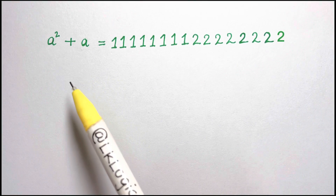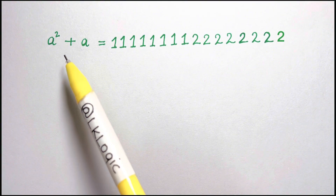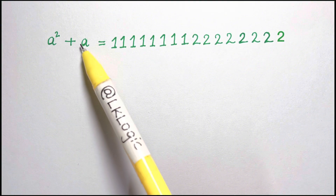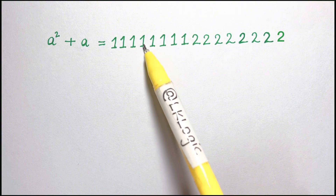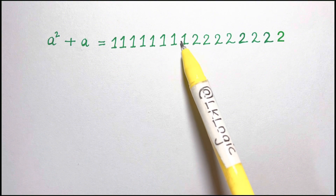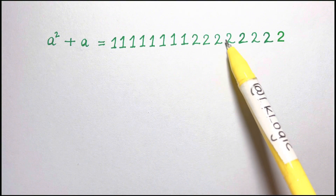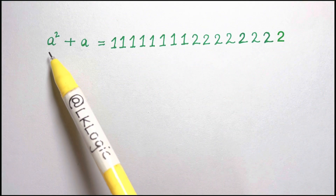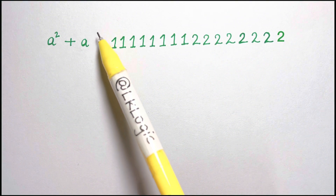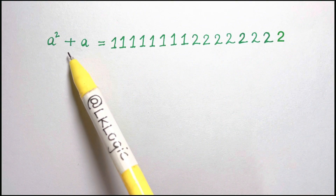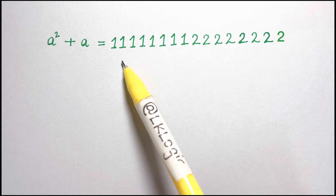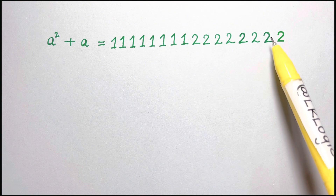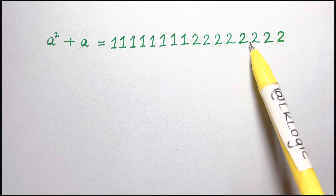Hi everyone. Now we know how to solve this equation which is a² + a = 111111112222222 and so on. Here we have a simple variable on the left-hand side but here it's a complicated number. So how should we solve it?